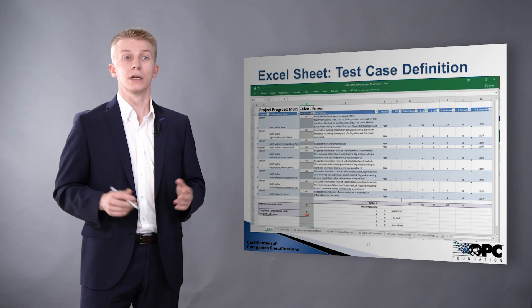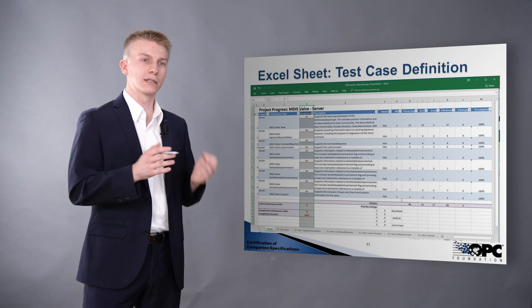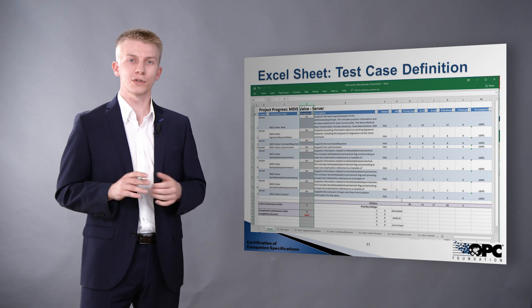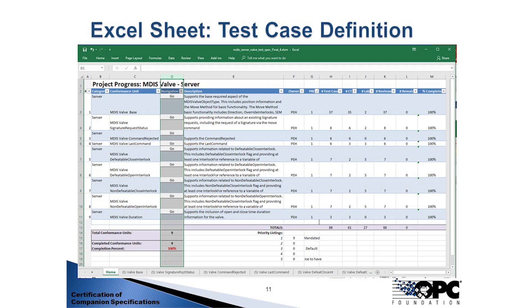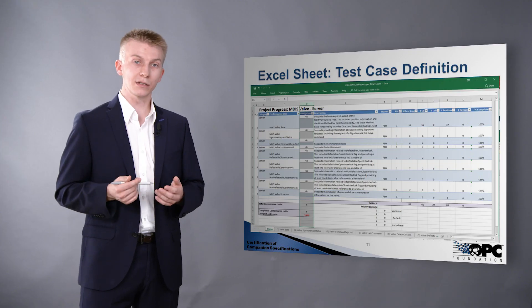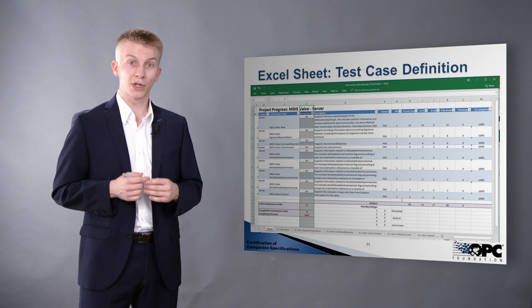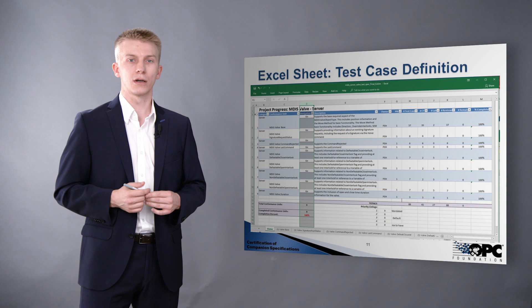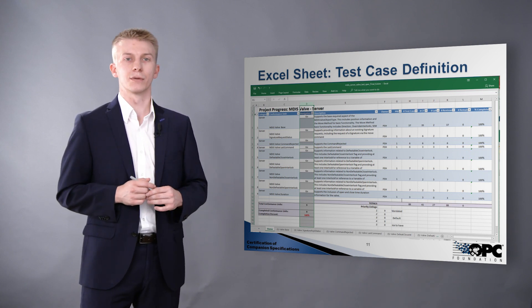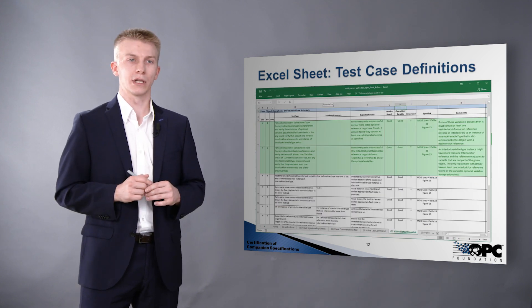Let's take a look at that Excel sheet. The test case definition is in a separate worksheet. In the first worksheet we have an overview of all defined conformance units and all the test cases. There are several columns specifying an owner, the number of test cases defined, and whether a test case is a CTT test case or a lab test case. A CTT test case is an automated test where a compliance test tool script exists. A lab test case is a manual test because it requires manual interaction with the product — for example, placing an item on a sensor.